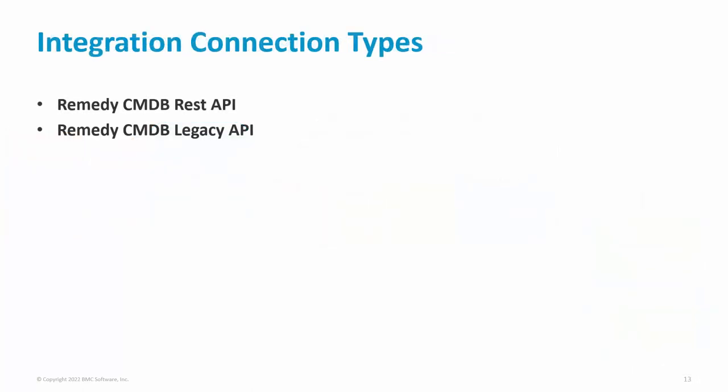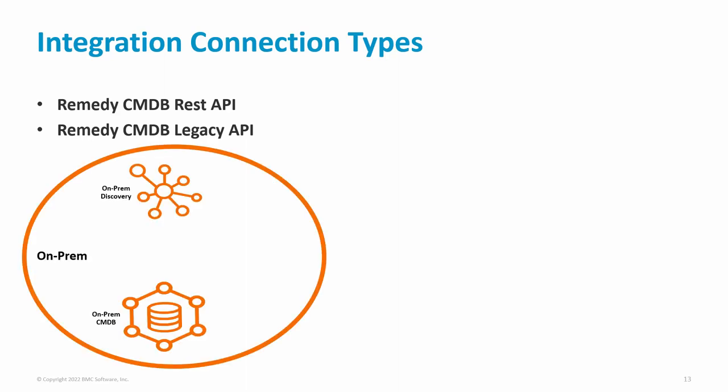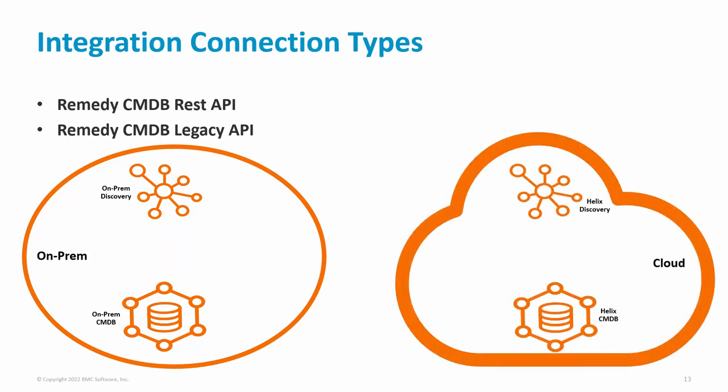Now let's talk about the integration connection types available to integrate these two products. The first option is CMDB REST API and the second option is CMDB Legacy API. The CMDB REST API connection type is the newer and recommended approach. There are four types of deployments. The first is where both Discovery and CMDB are deployed on-premises within your network — in this case, you can use either REST API or CMDB API. The next deployment possibility is that both products are deployed in BMC Helix or cloud, in which case you must use the REST API type of connection.